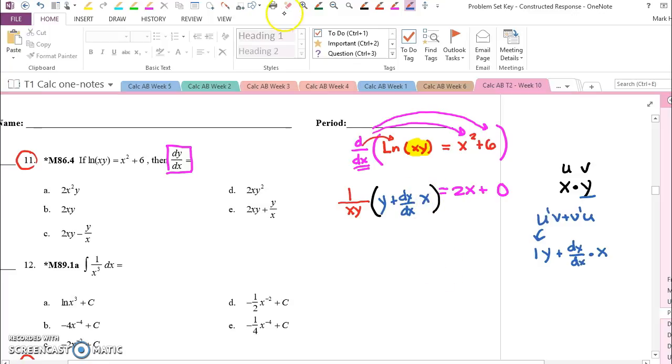And now I have to solve this for the one thing that I've been asked for, dy/dx. First thing I'll do, multiply both sides by xy. So on the left we cancel and we have y plus x dy/dx. And on the right hand side we have 2x times xy.